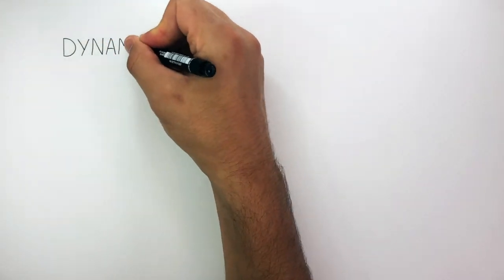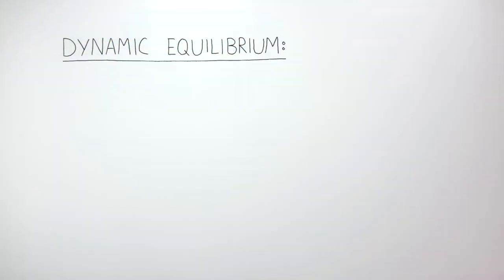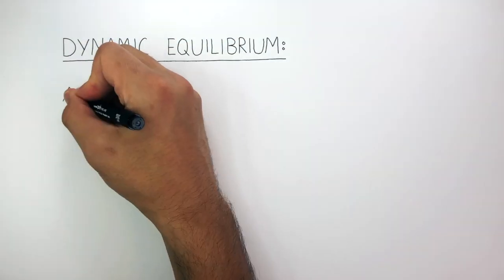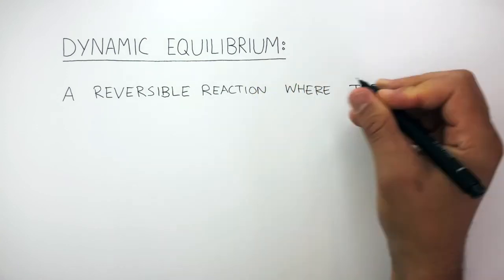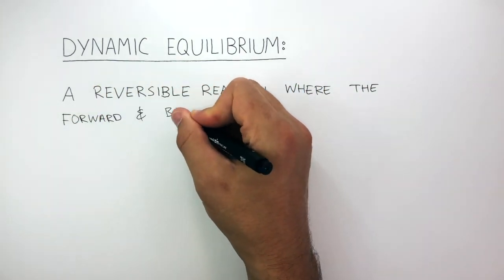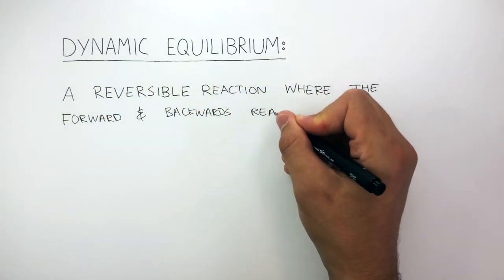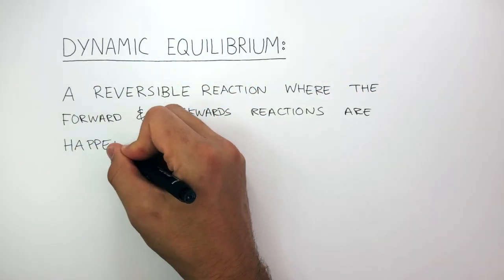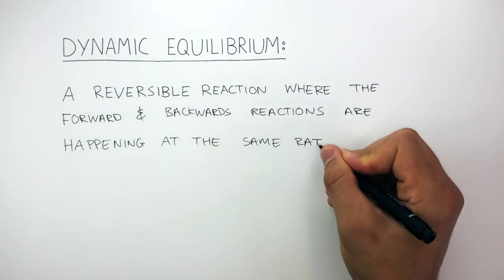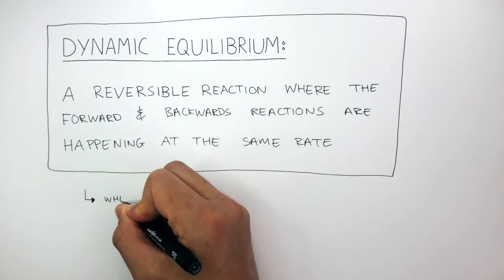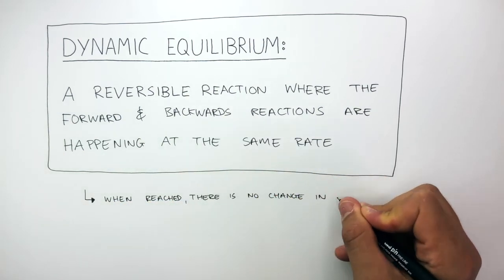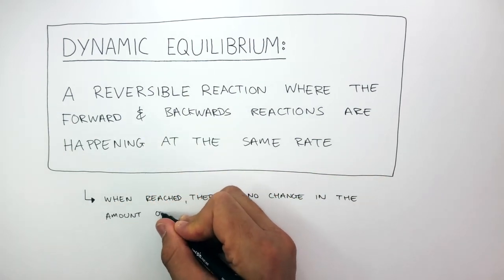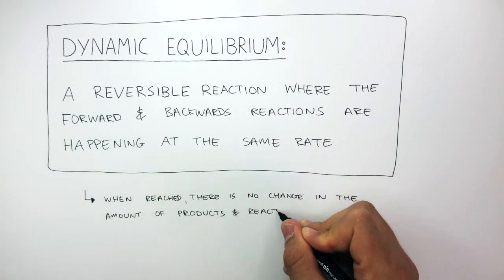The definition of a dynamic equilibrium is a reversible reaction where the forward and backward reactions are happening at the same rate. And when reached, there is no change in the amount of products and reactants.